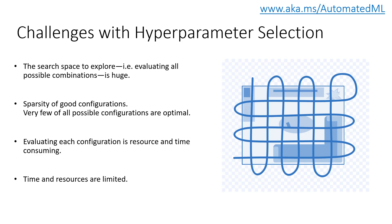Manual parameter setting and searching for optimal parameter values based on learning and experience can be very time consuming. Different estimators are better suited for different types of data and different problems, so often the hardest part of solving a machine learning problem can be finding the right estimator for your job.